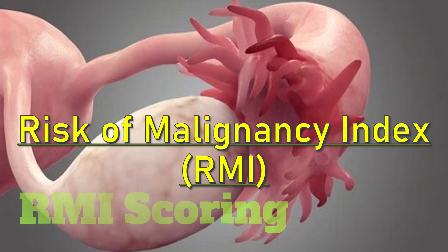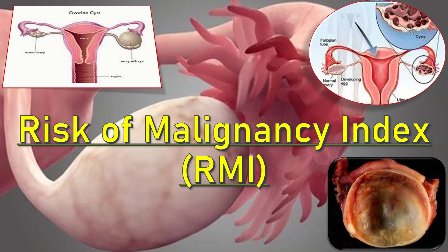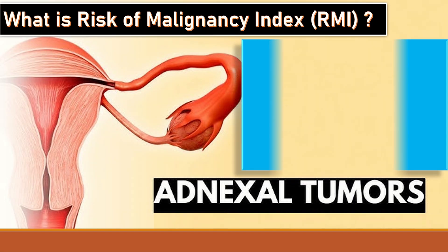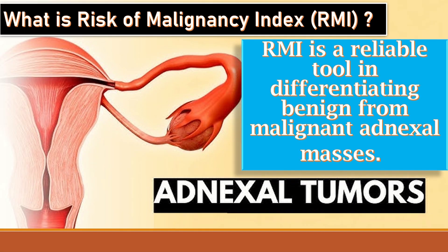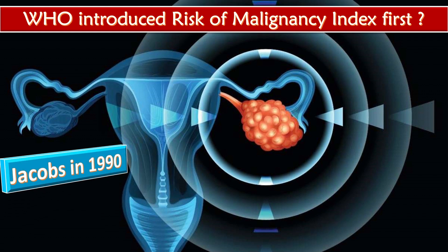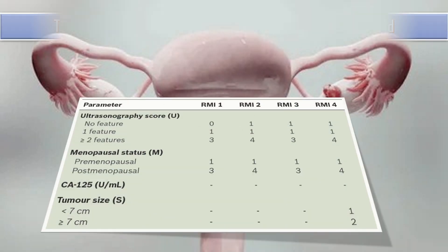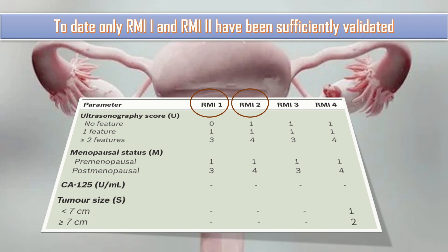Risk of Malignancy Index or RMI is a reliable tool in differentiating benign from malignant adnexal masses. The RMI was first described by Jacobs in 1990 and has since evolved into RMI2, RMI3, and RMI4. To date, only RMI1 and RMI2 have been sufficiently validated.